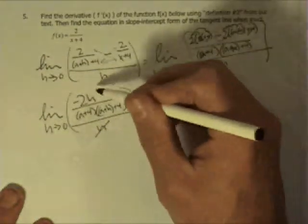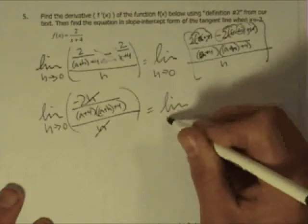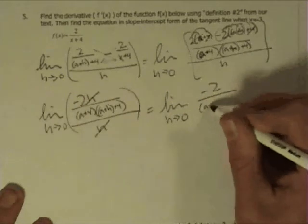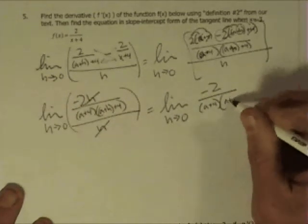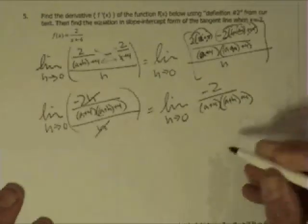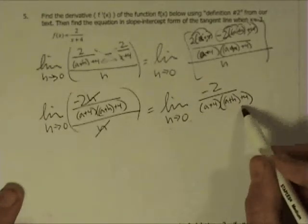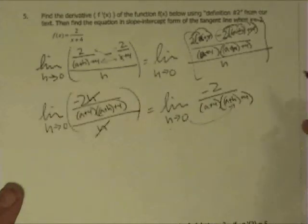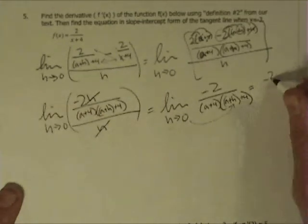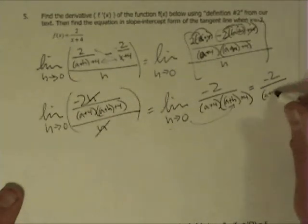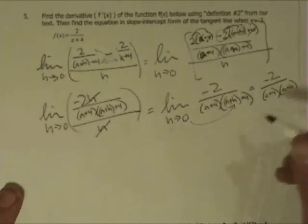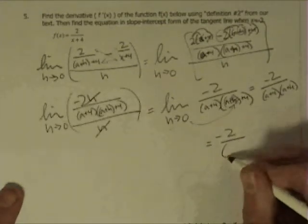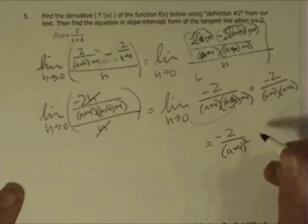Well, the h's cancel, and I get then the limit as h approaches 0 of negative 2 over a plus 4 times a plus h plus 4. Well, as h goes to 0, I no longer have the problem with division by 0, so I can just let h go to 0, and I wind up with the limit being negative 2 over a plus 4 times a plus 4, because that h just disappears. So final answer is negative 2 over (a plus 4) squared.